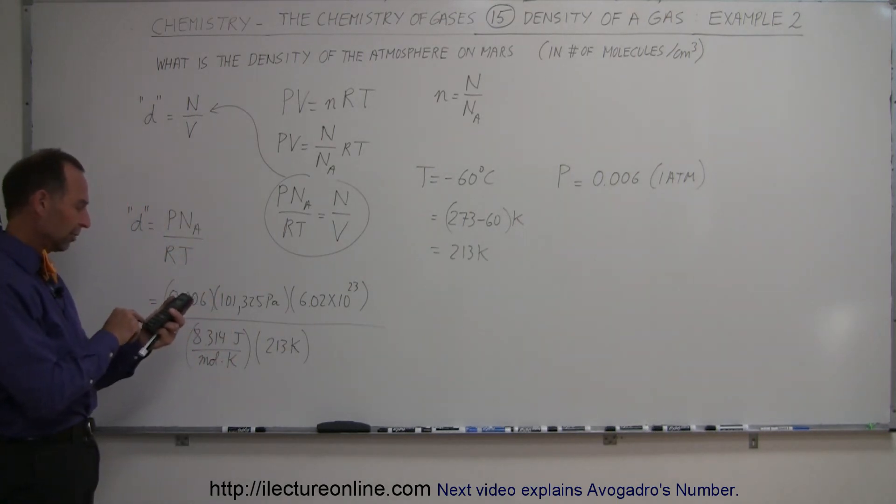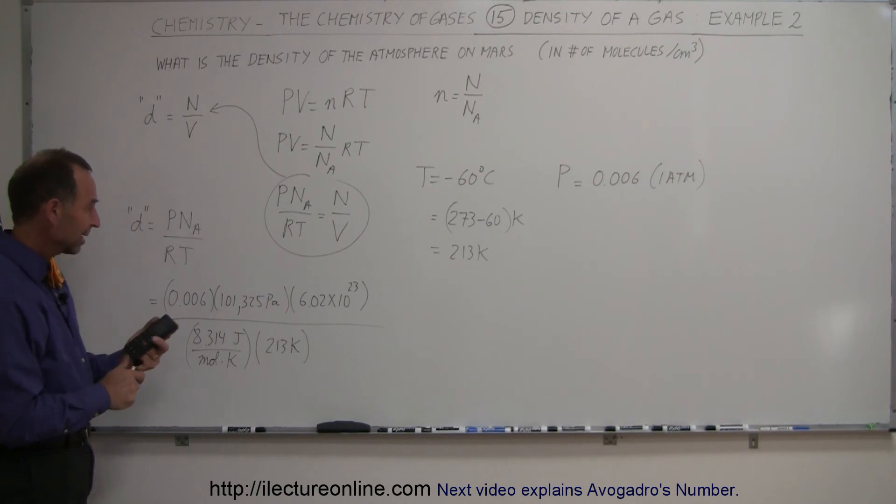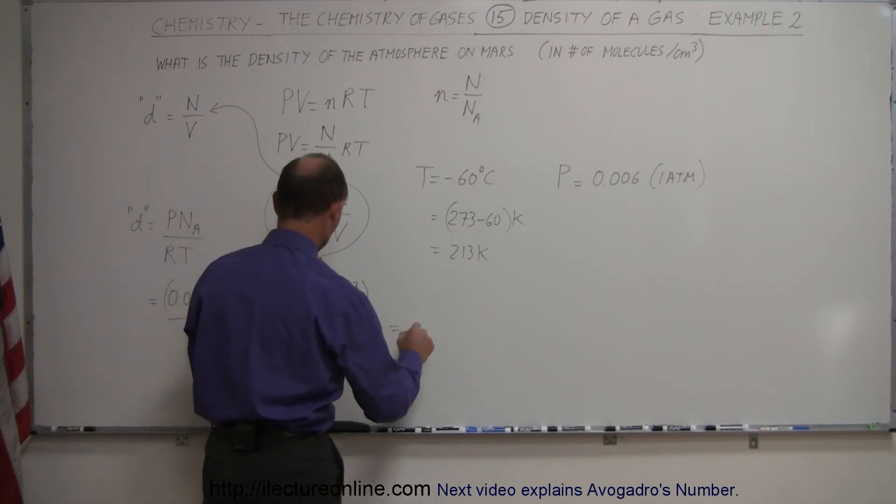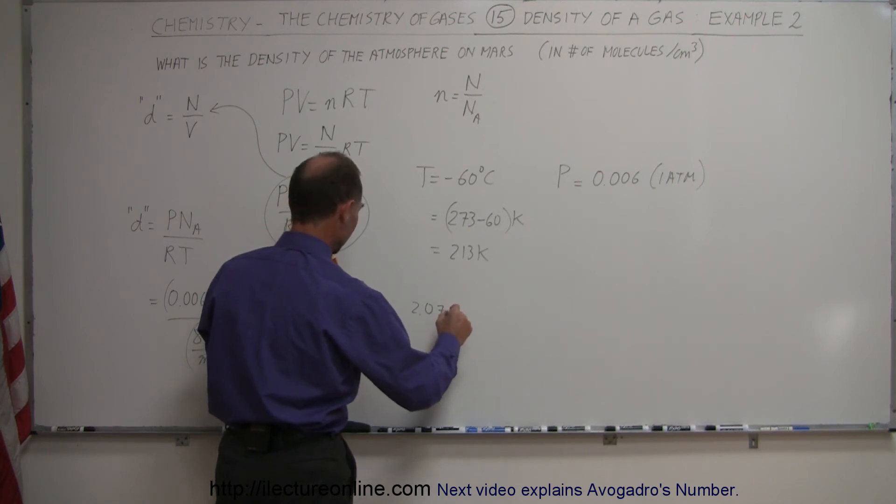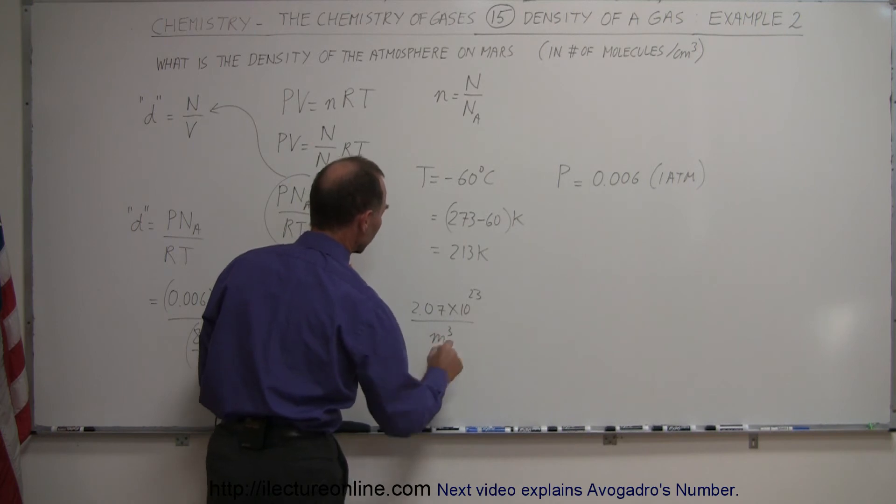All right, calculator. 0.006 times 101,325, times 6.02e to the 23rd, divide by 8.314 and divide by 213. And so what we get here is 2.07 times 10 to the 23rd molecules per cubic meter.